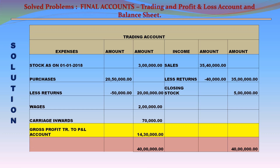Solution — Trading Account. On the credit side: Sales 35,40,000 less returns 40,000 equals net sales 35,00,000. Closing stock: 5,00,000. Total income: 40,00,000. On the debit side: Opening stock (1 January 2018): 3,00,000. Purchases 20,50,000 less returns 50,000 equals net purchases 20,00,000. Wages: 2,00,000. Carriage inwards: 70,000. Balancing the account gives a gross profit of 14,30,000, transferred to the profit and loss account.